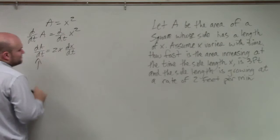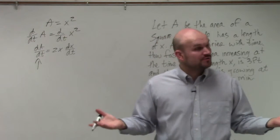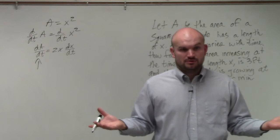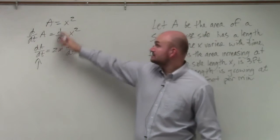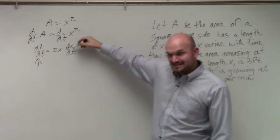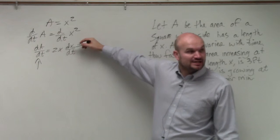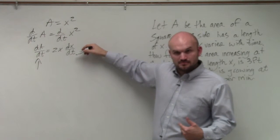dA/dt is basically saying the rate of change of the area with respect to time. Correct? X represents the side length. And again, I'm just going back to here. X represents the side length of the square. And dX/dt represents the rate of change of the side length with respect to t. Everybody follow?